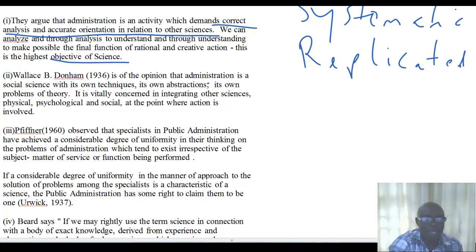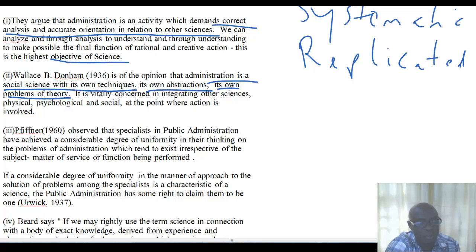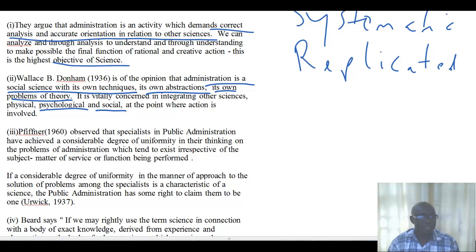The second reason was proposed by Wallace Dunham in 1936. He was of the opinion that public administration is a social science and it has its own techniques, its own abstractions, its own problems of theory, just like the sciences. Therefore, it is vitally concerned with integrating other sciences like psychology and social psychology, and action is also involved, just like the sciences. What Wallace is saying is that public administration is a science — we can call it a social science — because it has its own techniques, abstractions, and theories, just like the physical sciences.